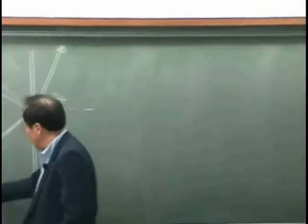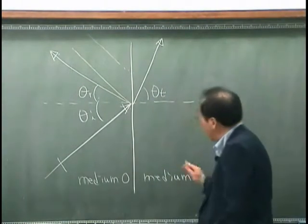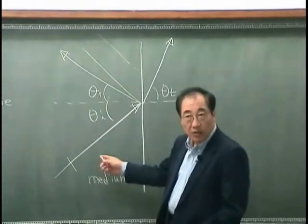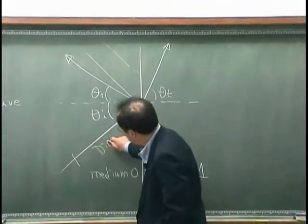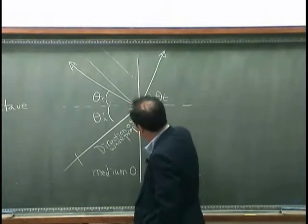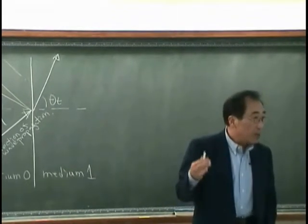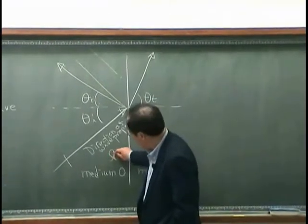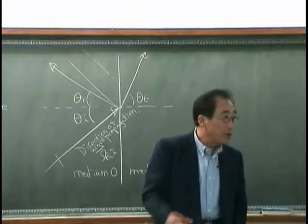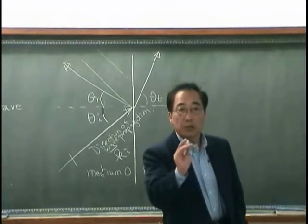And we call this medium 0 and medium 1. And note that this vector certainly indicates the direction of wave propagation, right? Direction of wave propagation, as well as how many waves per unit length that wave has. That is what? Wave number.